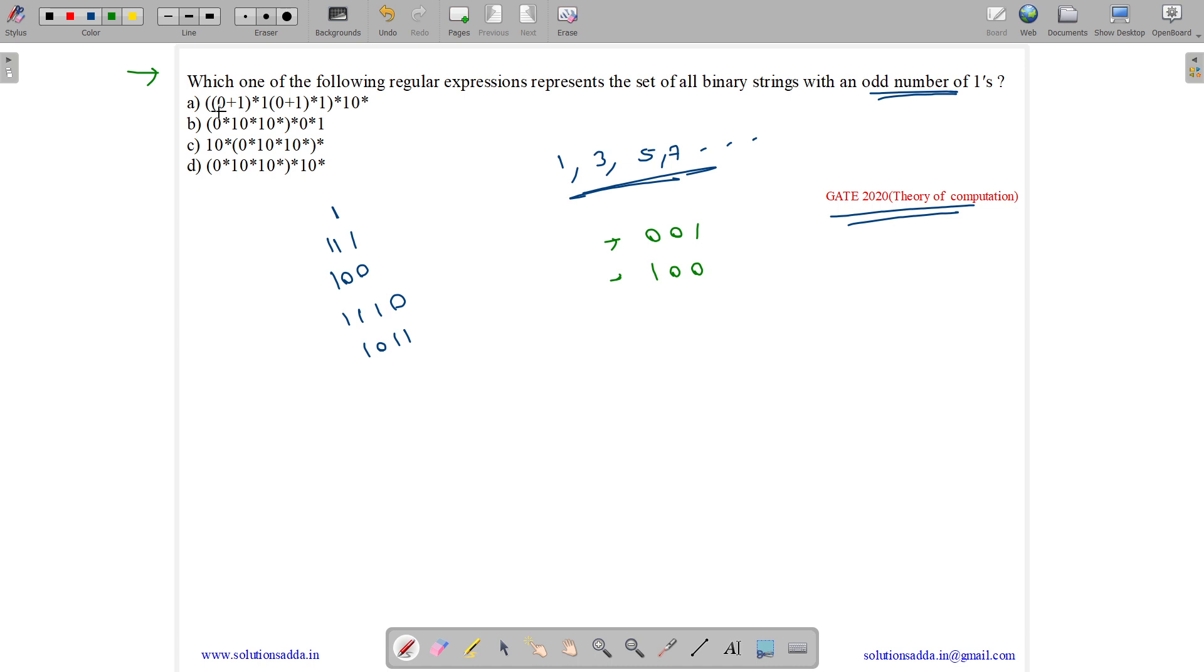Now, let us try to generate 001 from here. See, 1 should always come, so 1 will always come. Now we have choice over here, choice over here.